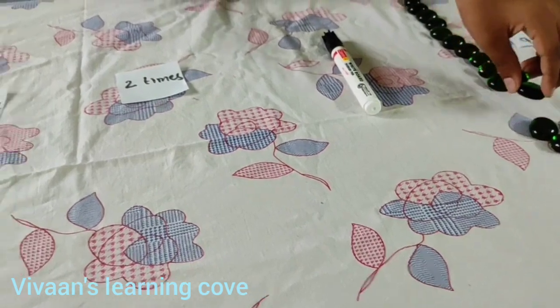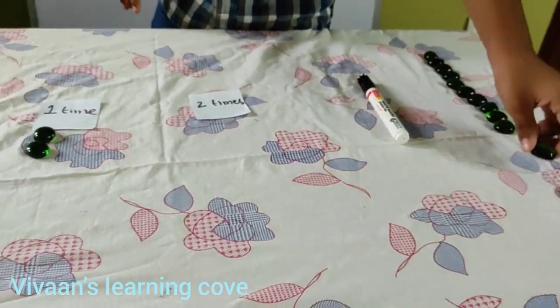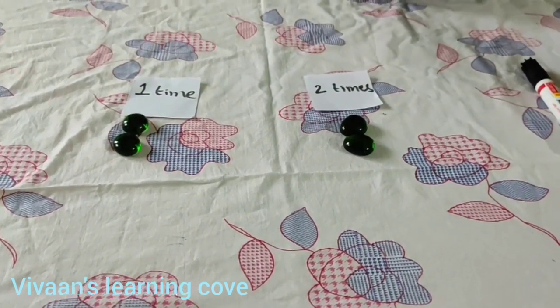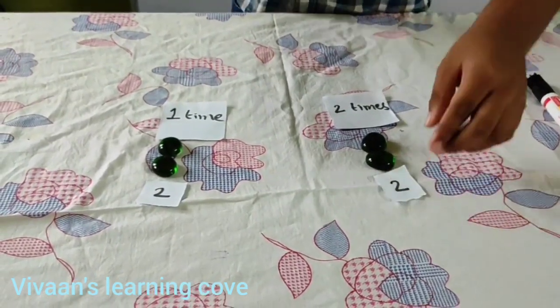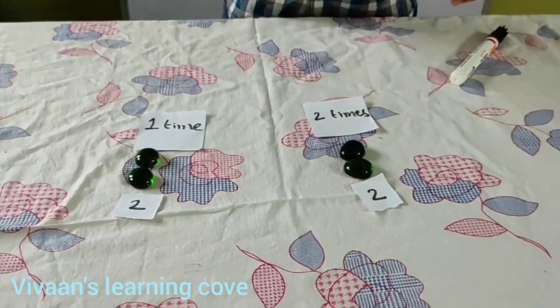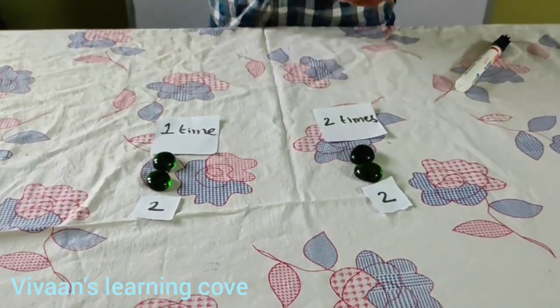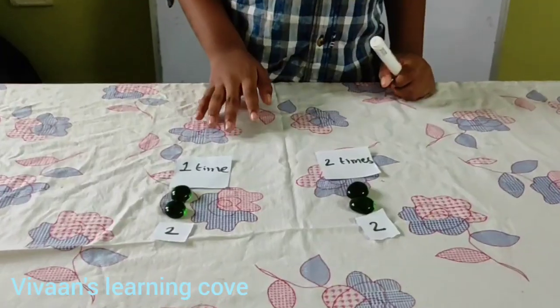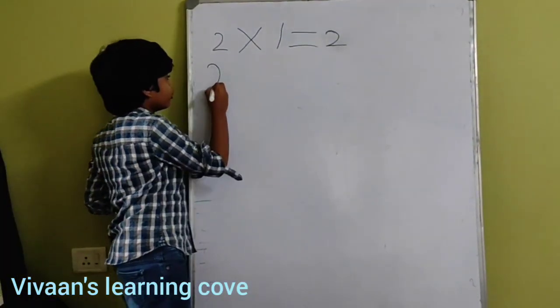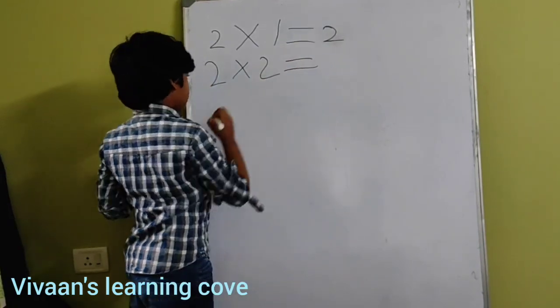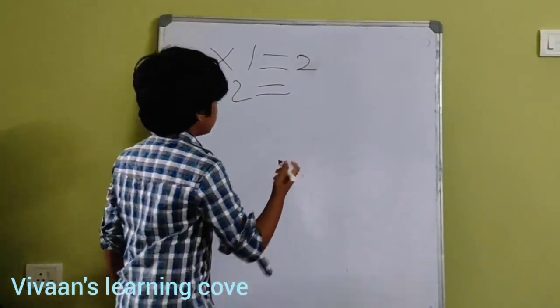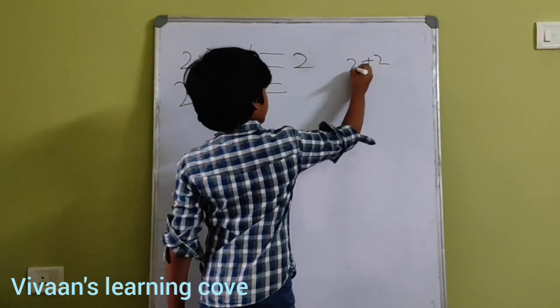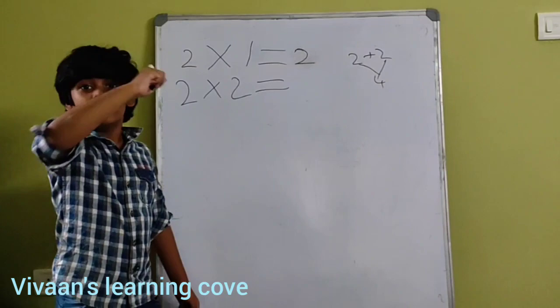Now I am taking 2 pebbles 1 time and 2 pebbles 2 times. I represent them under 1 time and 2 times — so now we have 4 pebbles. This means you are taking 2 pebbles 2 times. We write it like: 2 times 2 equal to 4. We should write it as 2 plus 2 equal to 4.